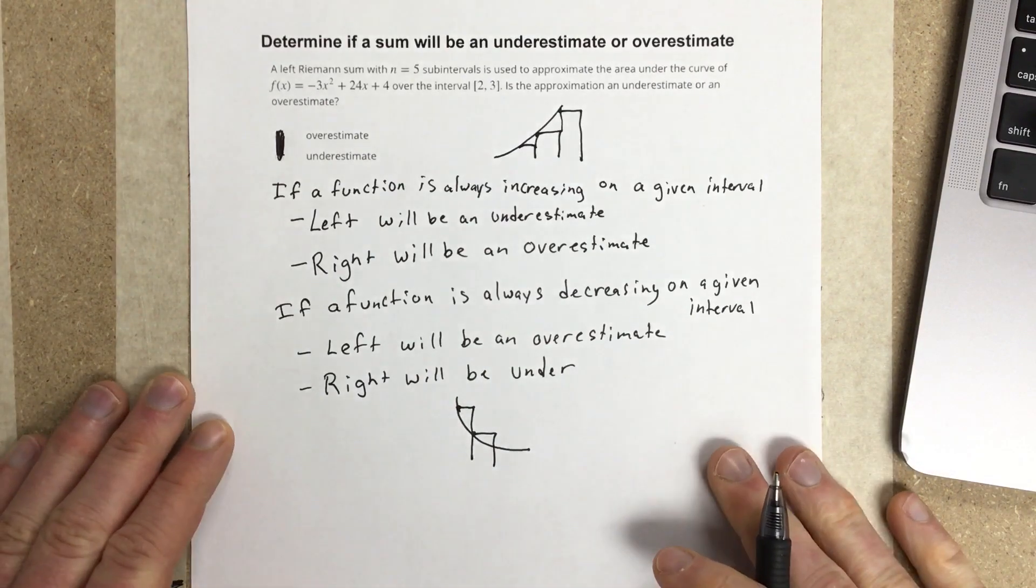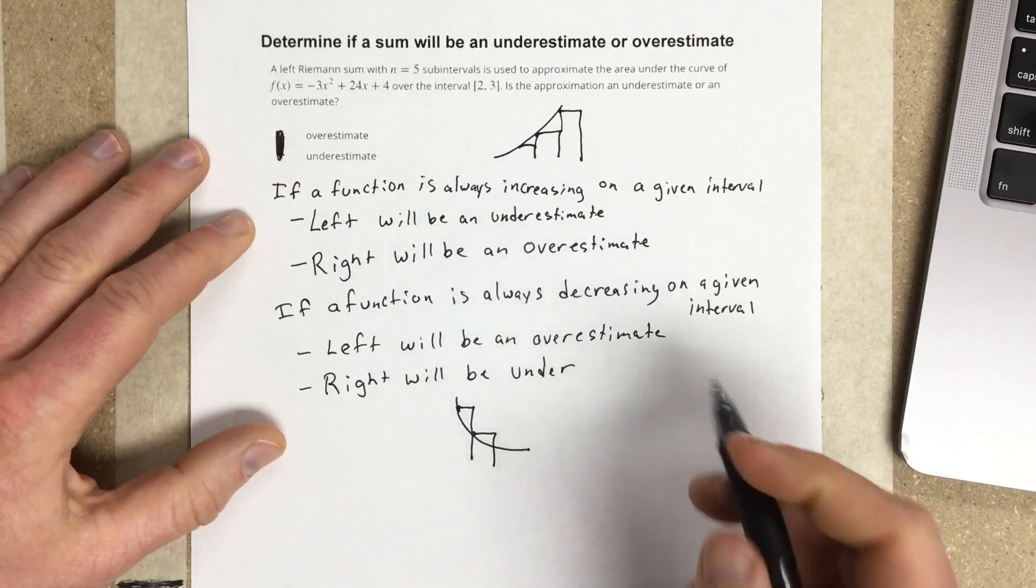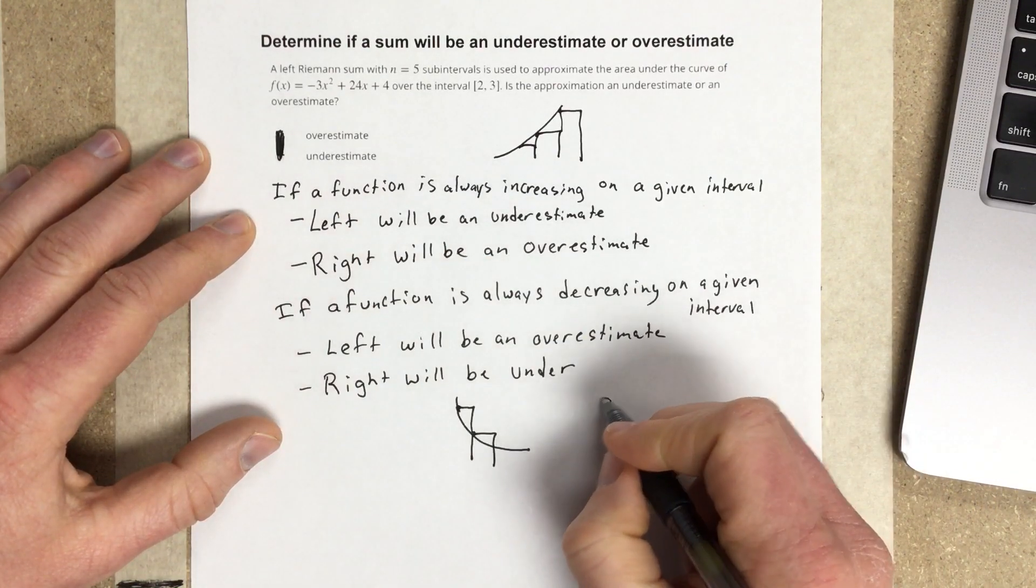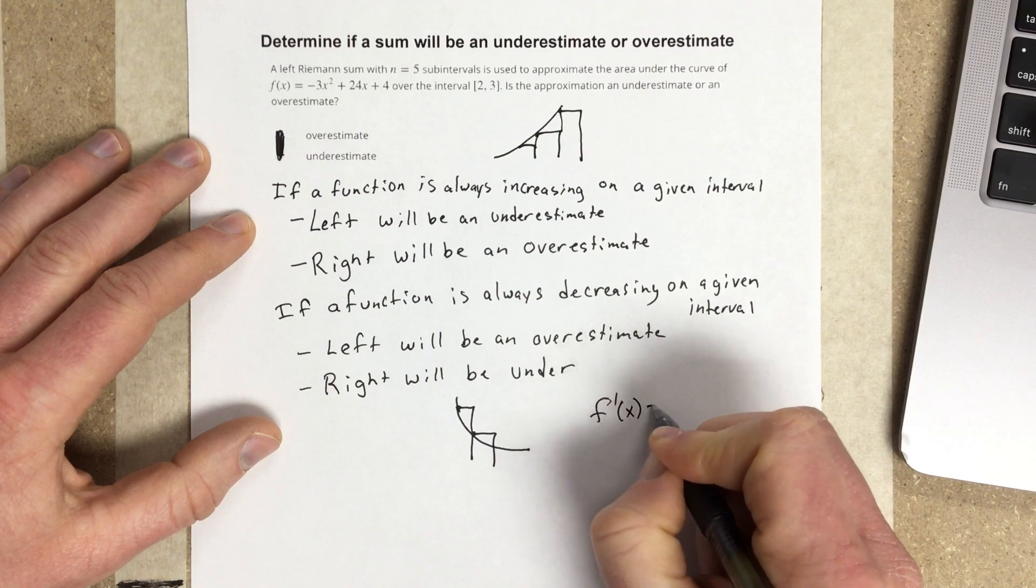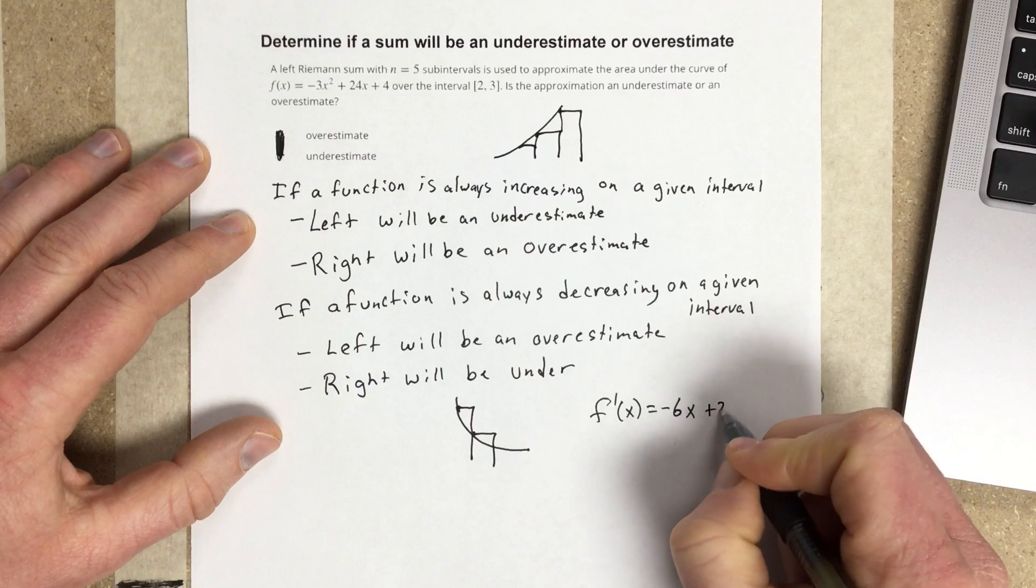So all we have to determine is, is this thing increasing or decreasing? To do that, we can find the derivative. So let's find f'(x). So f'(x) would be -6x + 24.